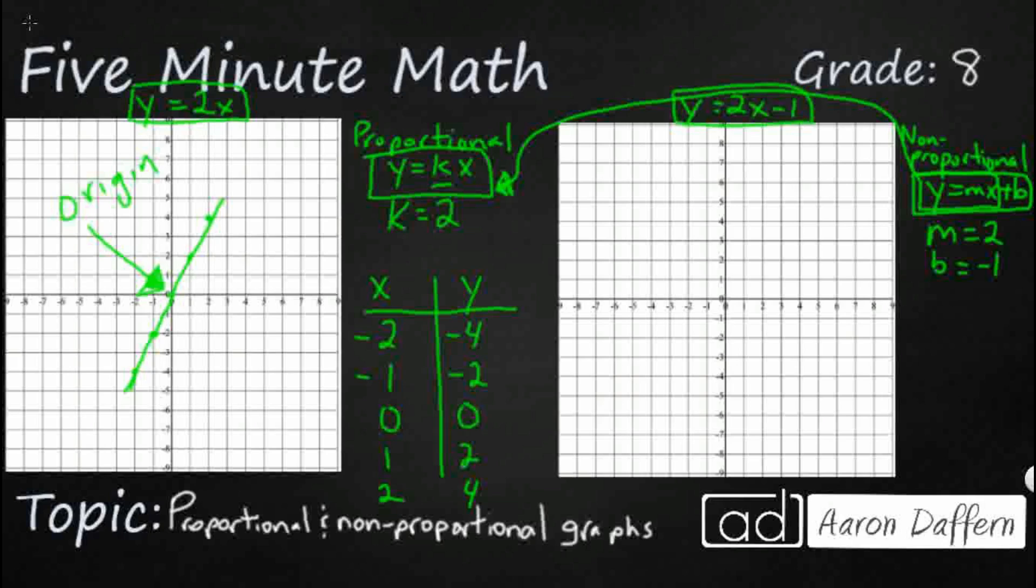whereas we have y equals 2x over here on the left that we've already graphed. And so what does that look like if we plot out those same x-coordinates? See what happens to our graph. Negative 2, negative 1, 0, 1, 2.